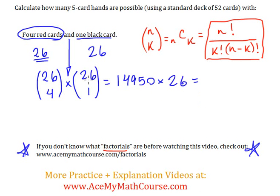By the way, every time I get n or anything choose one, or combination one, it's just going to be the n value. So that's just 26.